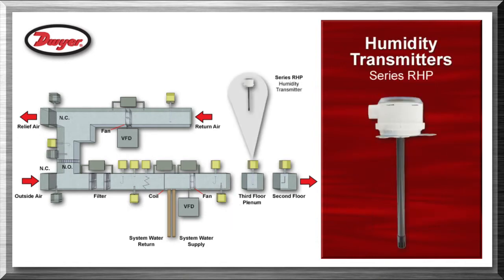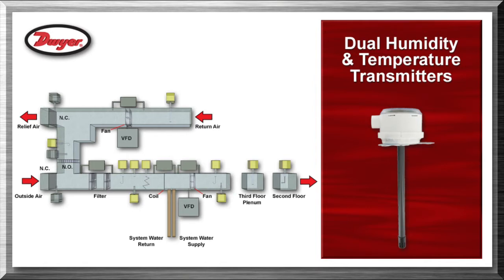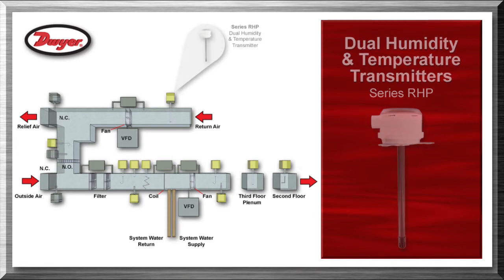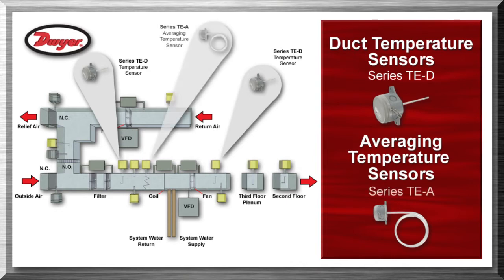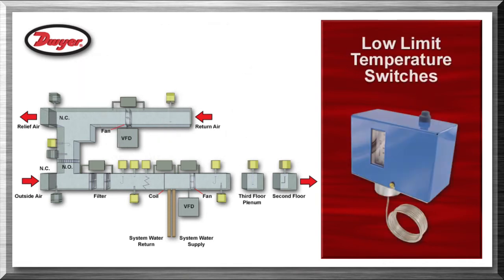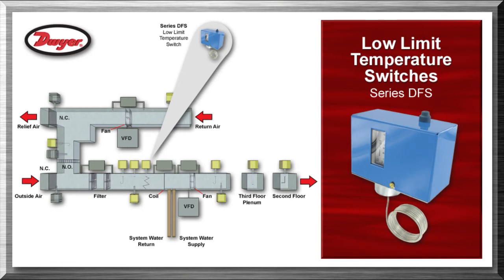Humidity transmitters series RHP are inserted into the duct and used to monitor discharge humidity in systems with enthalpy wheels or humidifiers. Dual humidity and temperature transmitters series RHP are inserted into the duct and used to monitor exhaust air humidity and temperature for economizer applications. Duct temperature sensors series TE-D and averaging temperature sensors series TE-A are inserted into the duct and used to monitor the supply air, mix air, and exhaust air temperatures. Low limit temperature switches series DFS are inserted into the duct to monitor temperature to prevent frost buildup on the coils, protecting the coils from freezing.